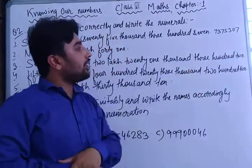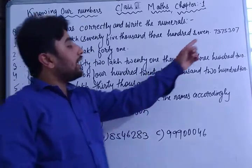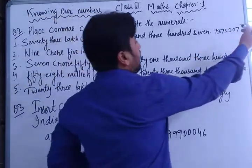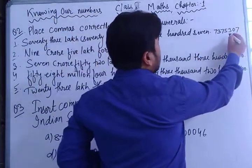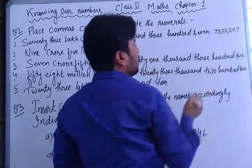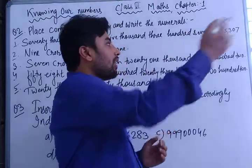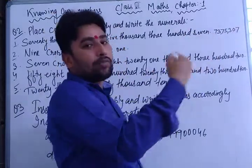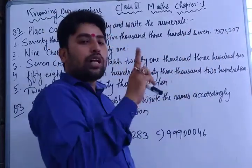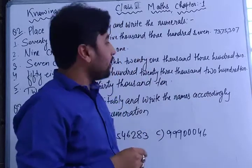In the Indian system, you count from the right side: after the first three digits, put a comma, and then after every two digits, put a comma. So from the right side — three digits, first comma, then two digits, comma, then two digits. That is the Indian system rule.